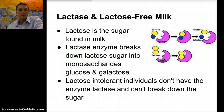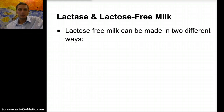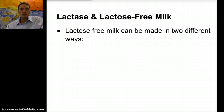Lactose intolerant individuals don't have the enzyme lactase and can't break down the sugar. That basically means they're missing or lacking the lactase enzymes. It's actually possible to make lactose-free milk — this is an example of bioengineering or biotechnology, basically principles in biology being used to produce a product that can be marketed and sold. Scientists have used advancements in understanding how lactose and lactase work to make a product that actually helps and benefits people.